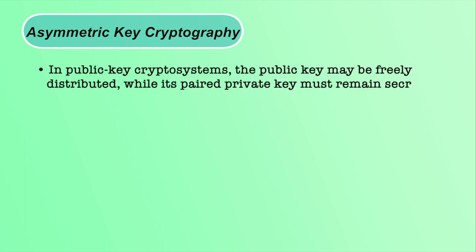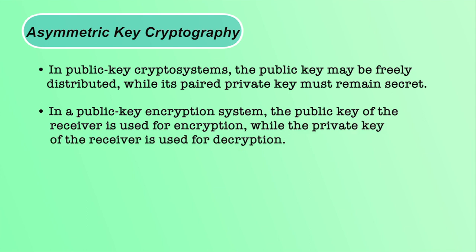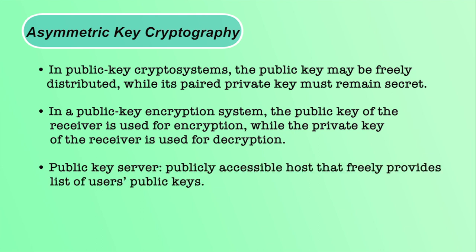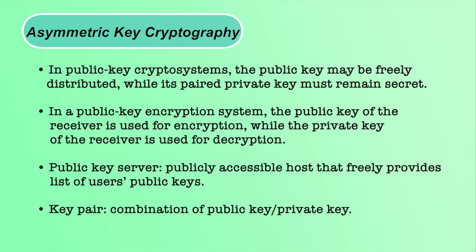In asymmetric key cryptography, two different keys are used for encryption and decryption. Both the sender and receiver have two keys: one public key and one private key. Public keys are available in a public key server and can be accessed by anyone. Encryption is done using the public key of the receiver and decryption is done using the private key of the receiver. Both keys have a mathematical relation ensuring that if a message is encrypted by the public key, it can only be decrypted by the corresponding private key. The combination of public key and private key is called a key pair.